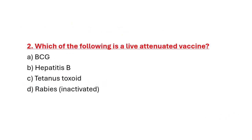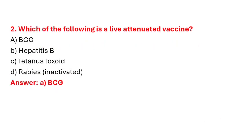Question 2: Which of the following is a live attenuated vaccine? Option A: BCG. Option B: Hepatitis B. Option C: Tetanus Toxoid. Option D: Rabies. Correct answer is Option A: BCG.